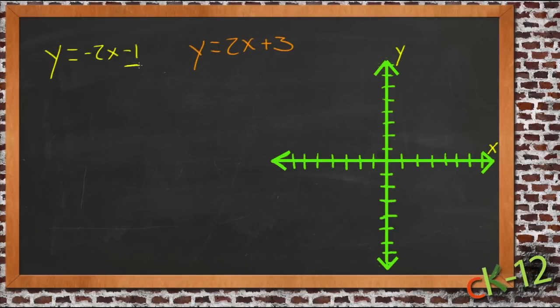Here we have a y-intercept of -1, so we have a point right here. Then our slope is -2, so it's either up 2 back 1, or down 2 forward 1. So that one has a line that goes through right about here. Go both ways so that our line goes onward.